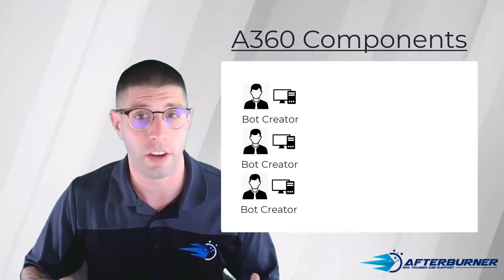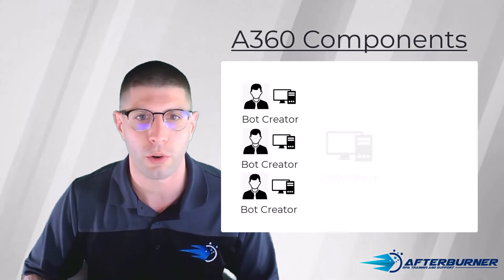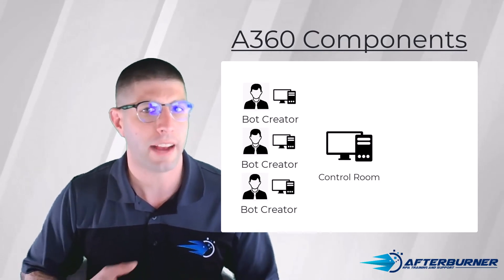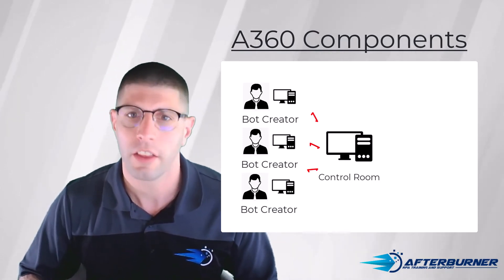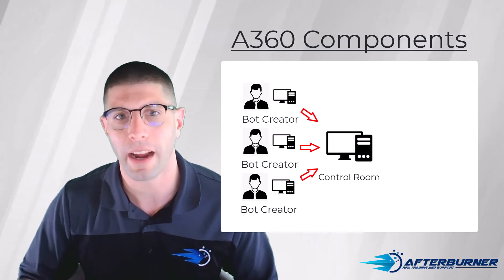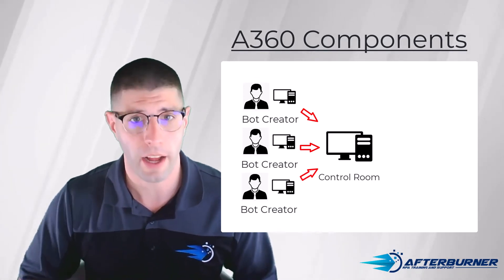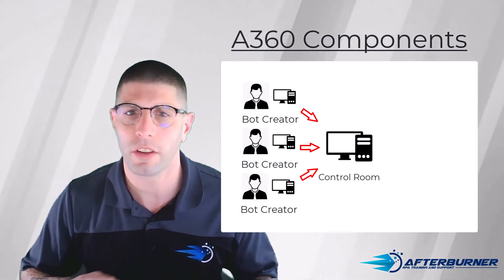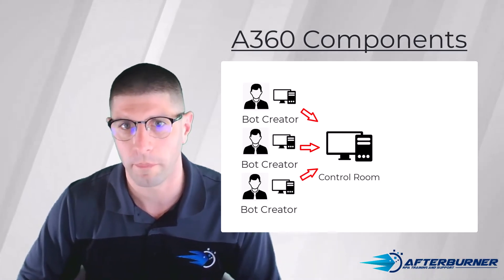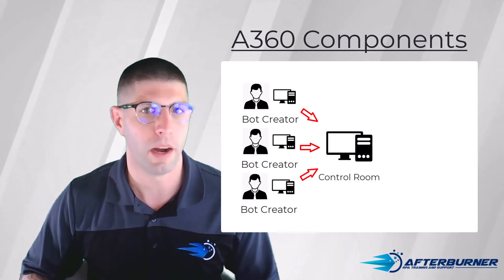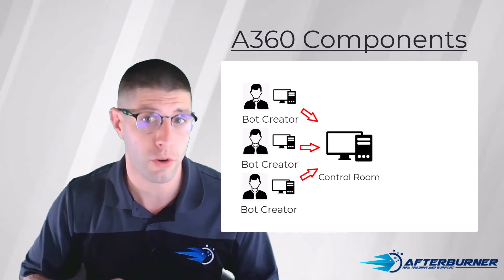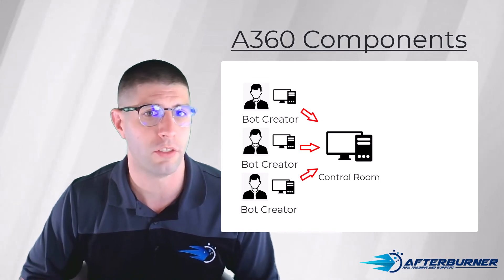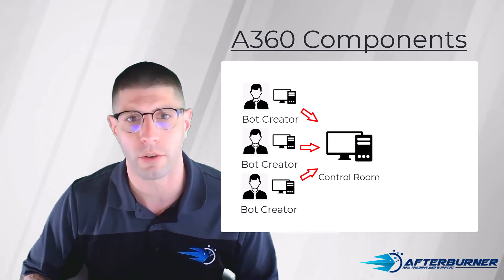The RPA workspace and other A360 products are all stored in the control room, our second component. When bot creators access the workspace to build bots, they're connecting to this control room through the bot agent. The control room stores all bots for any user, contains logs of bot executions, and performs lots of administrative functions as well. Depending on your deployment model, the control room might be stored on your servers or AA's servers, but regardless, bots are uploaded to this control room and then deployed from there to our final component.